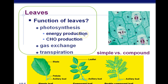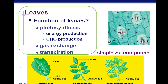In photosynthesis, we make energy by combining carbon dioxide to make sugars — CHO means carbohydrate production, starting with glucose. We also do gas exchange through holes at the bottom of the leaf called stomates, and transpiration also occurs in the leaves: evaporation of water, with more brought up by adhesion and cohesion through the xylem within the stem. Here we have simple versus compound leaves — a simple leaf is just one leaf, but a compound leaf has a whole bunch of leaflets attached to a single side stem.